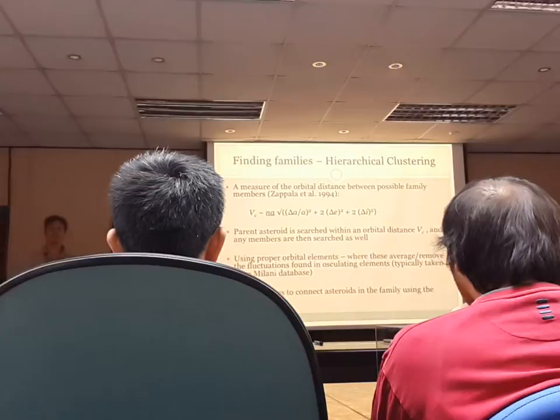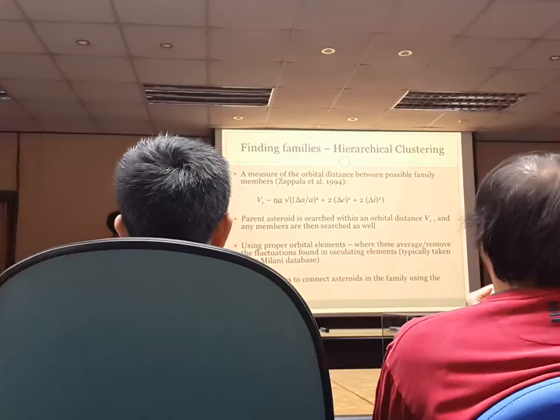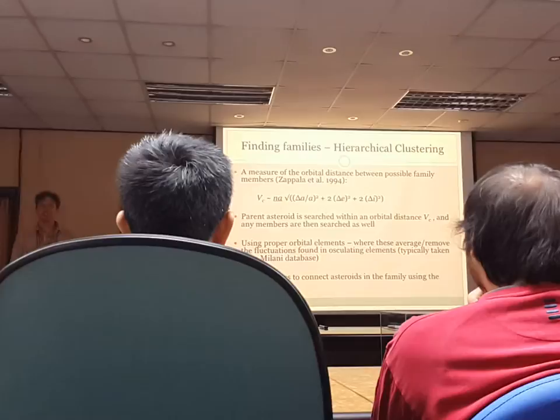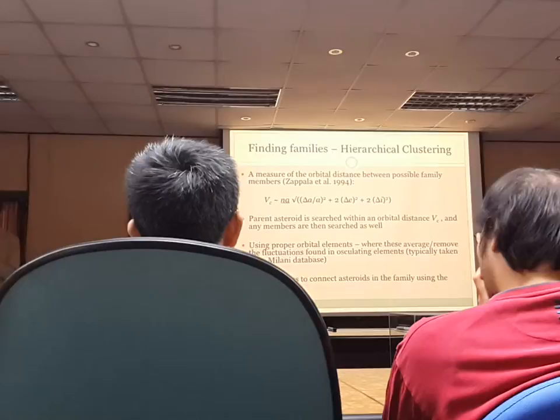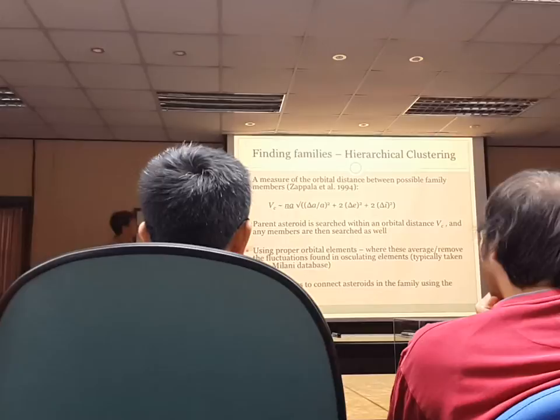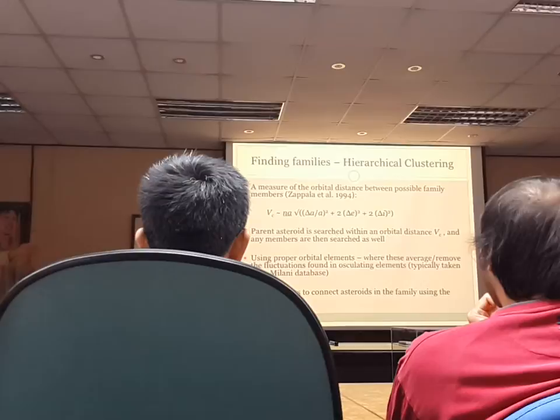There's a simple clustering technique called hierarchical clustering where we look at what we call a delta-V of each orbit, where we quantify the difference in asteroids' orbits in terms of the velocity it would take to change one asteroid's orbit to another. That criterion tells us the velocity requirement to evolve from one orbit to the next.